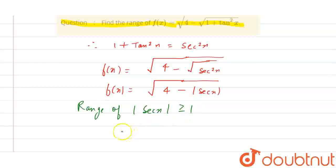So we can say that the value of minus mod of sec x, this equality sign is changing, that is less than or equal to minus 1.